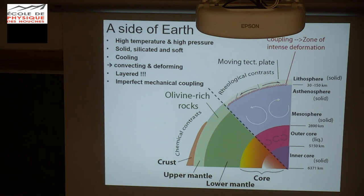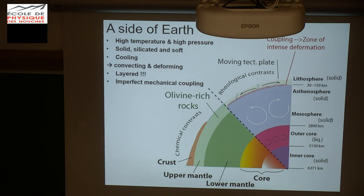If we cut a slide inside our planet, we can look at it. You know it's composed of different layers. The first classification is based on chemical composition — this nice cake. We have the crust, then the upper mantle, then the lower mantle, then the core. The crust is more enriched in silica than the mantle, and the core is mostly composed of iron with a little bit of nickel and just a little bit of silicon at the trace element level.